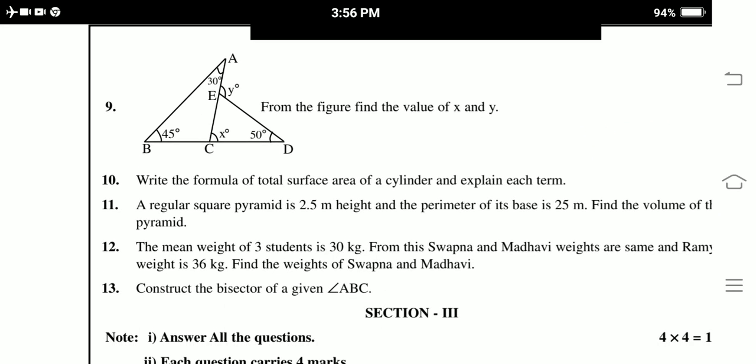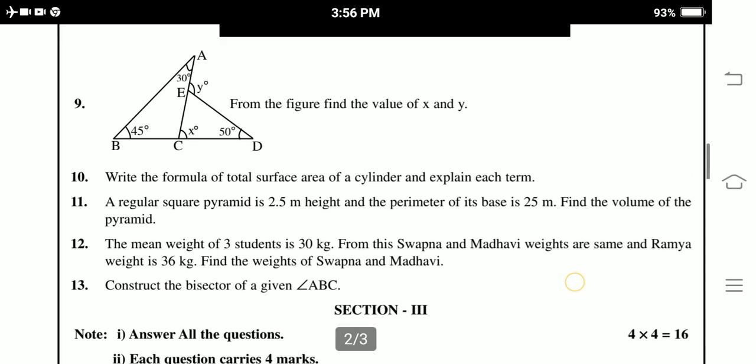10th. Write the formula of total surface area of a cylinder. Explain each term. A regular square pyramid is 2.5 meter height. The perimeter of the base is 25 meter. Find the volume of the pyramid.